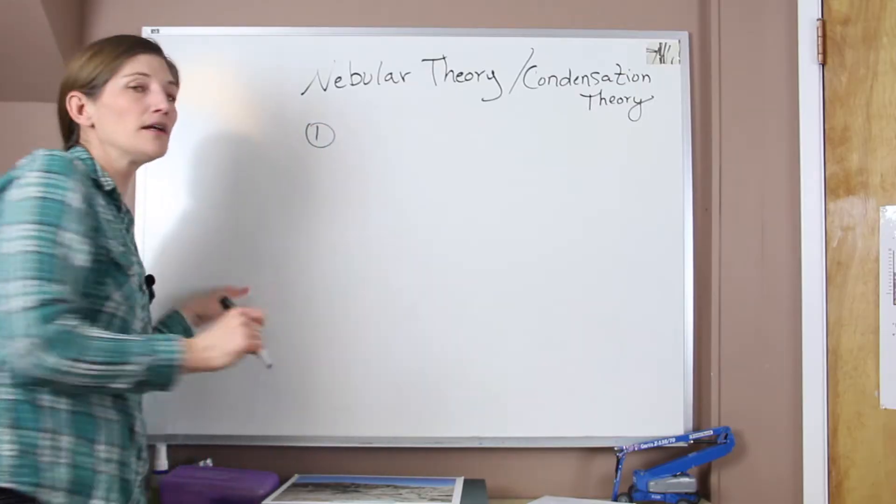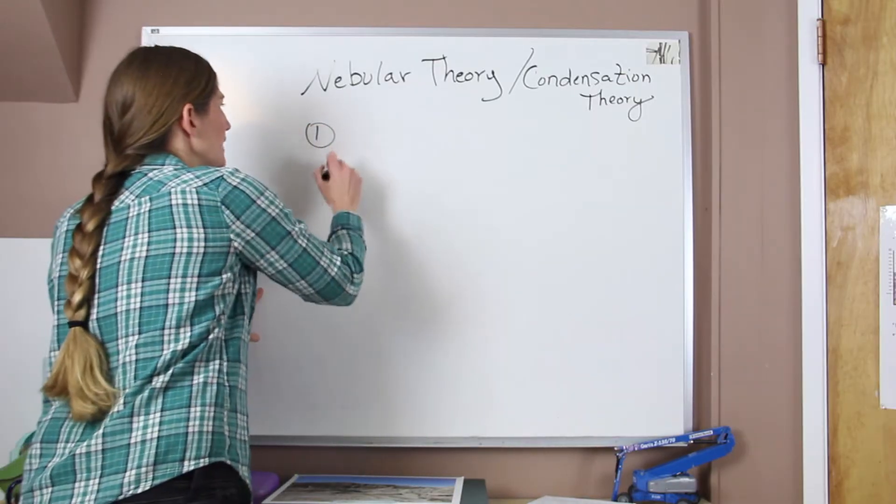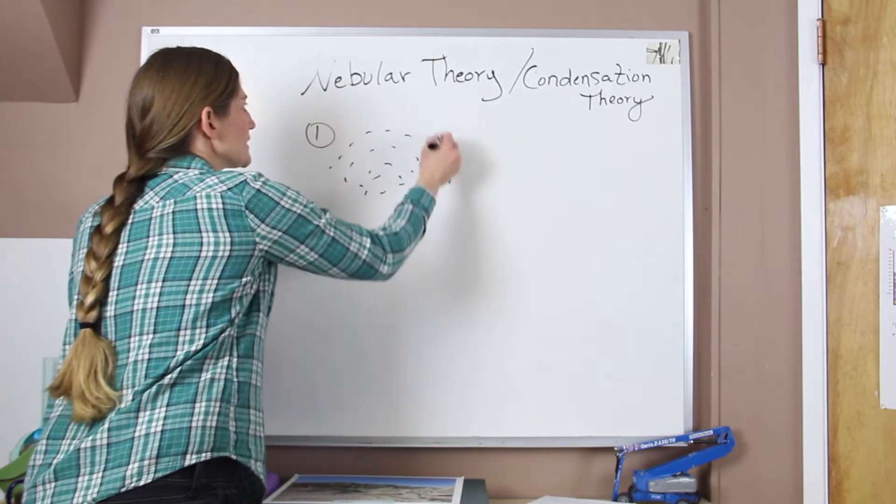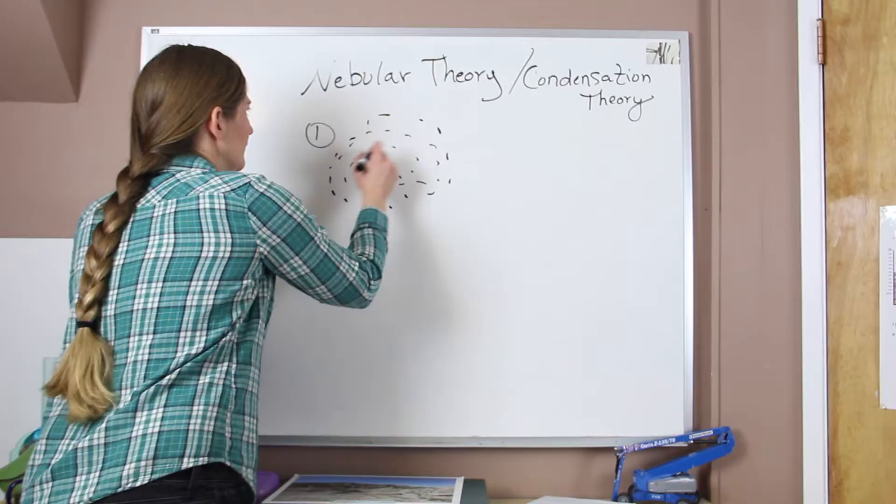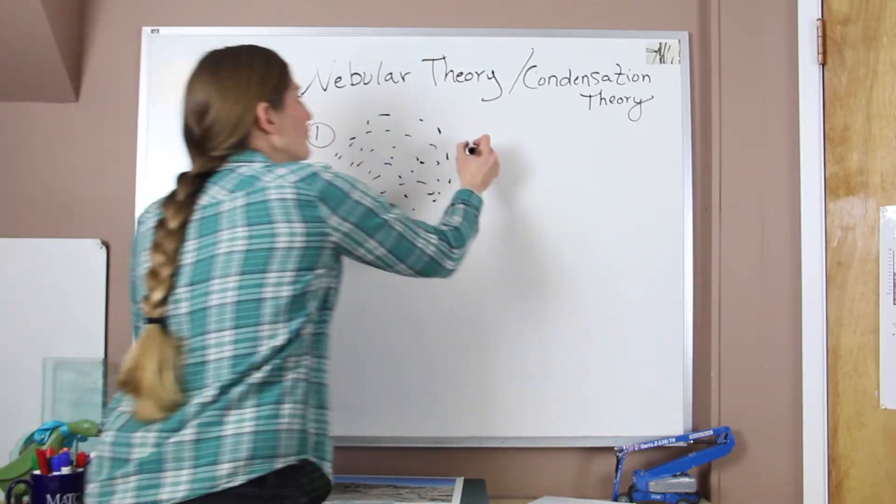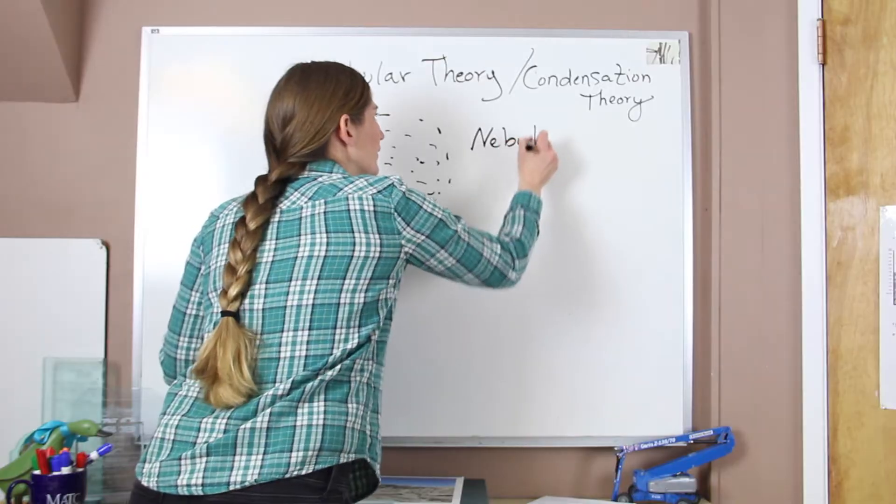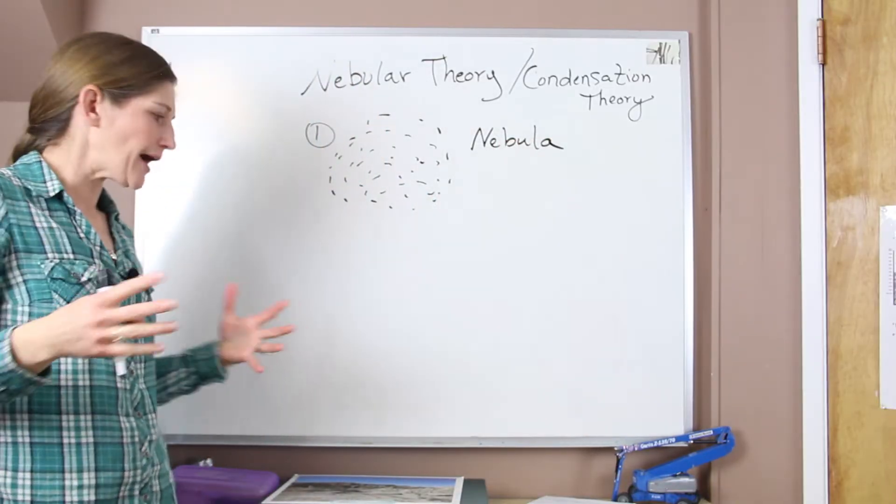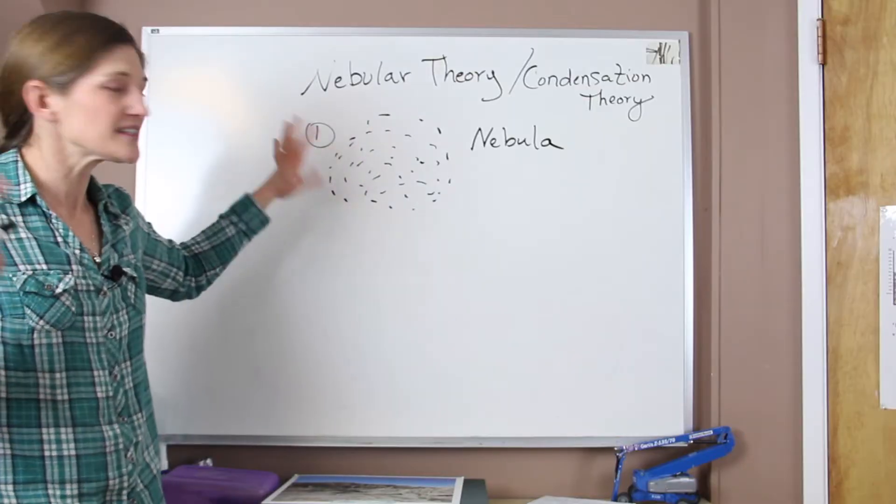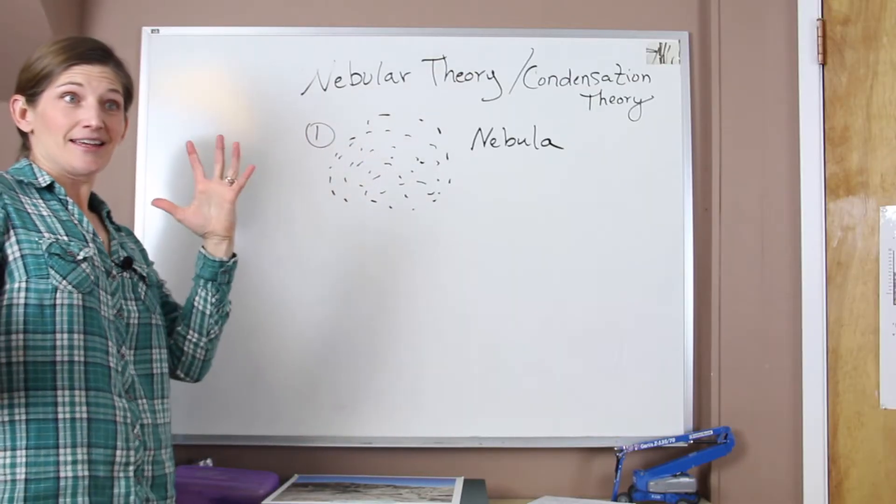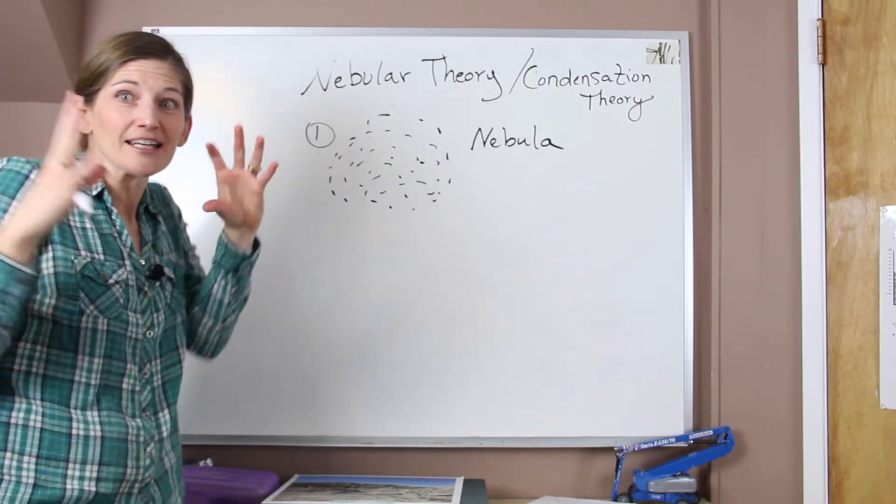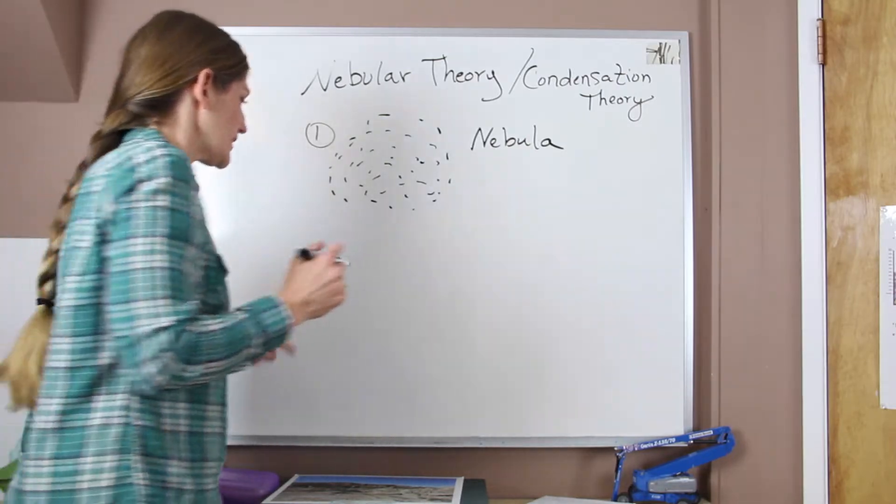In step one, we start out with a nebula. So a nebula is just a diffuse cloud. Here, I put all my dots here. And it looks almost a little too ordered, but I'm human. So we start out with our nebula, which is a diffuse cloud of gases and dust. And this is kind of just present. And it's hot. So as it starts to cool, it's going to condense and it starts to fall down on itself.